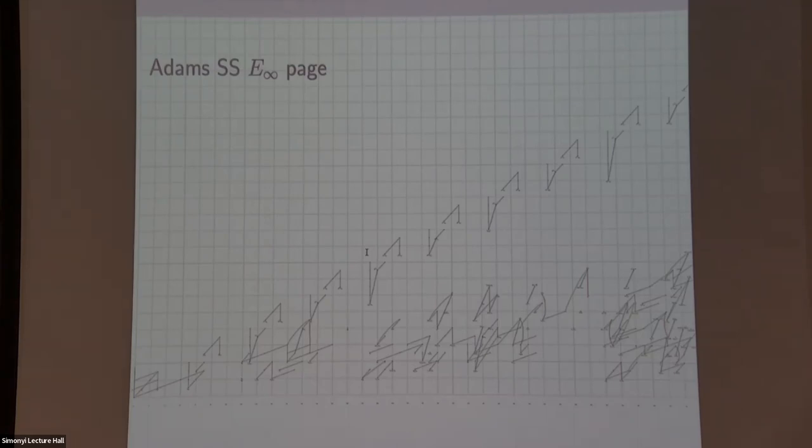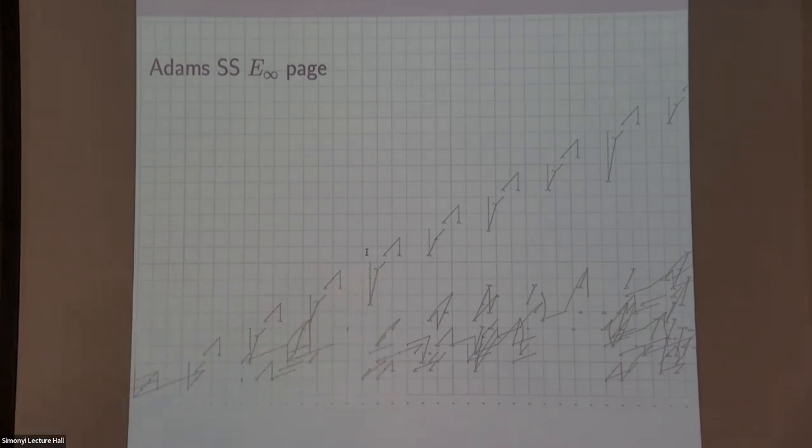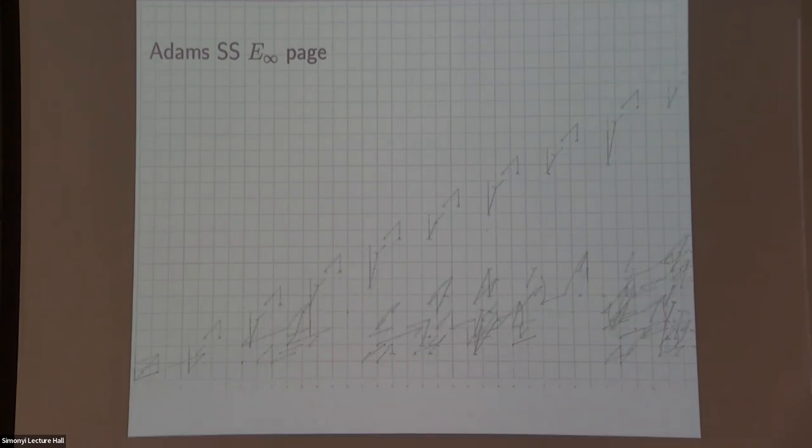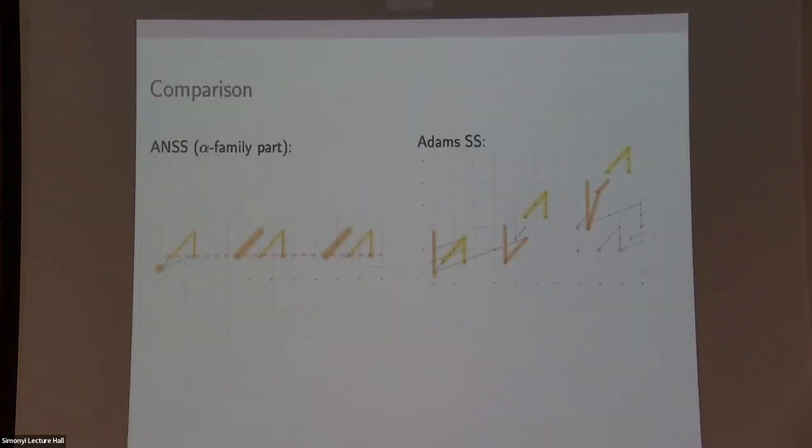By looking at this thing, maybe something you can immediately notice is that gap. Above that gap, you can see these very pretty regular patterns. You have an upside-down triangle and this upside-down thing appear every eight degrees. This will also appear, I think, later in a few slides. This is the Adams spectral sequence. And Adams-Novikov spectral sequence calculates the same thing, but it's pretty different. Since they compute the same thing, it's natural to compare them.